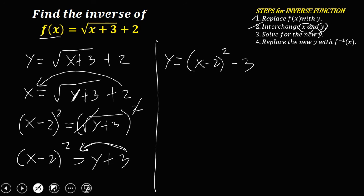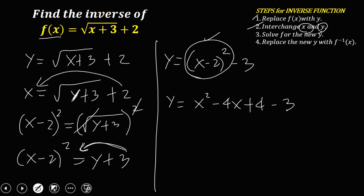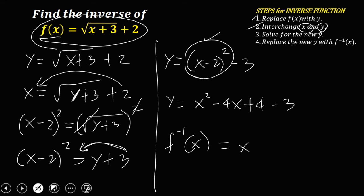To eliminate the radical, we take the square of both sides. So x minus 2 squared equals y plus 3. Then transpose 3 to the left side: y equals x minus 2 squared minus 3. Expanding this equation, y equals x squared minus 4x plus 4 minus 3. Therefore, the inverse of this function is x squared minus 4x plus 1.